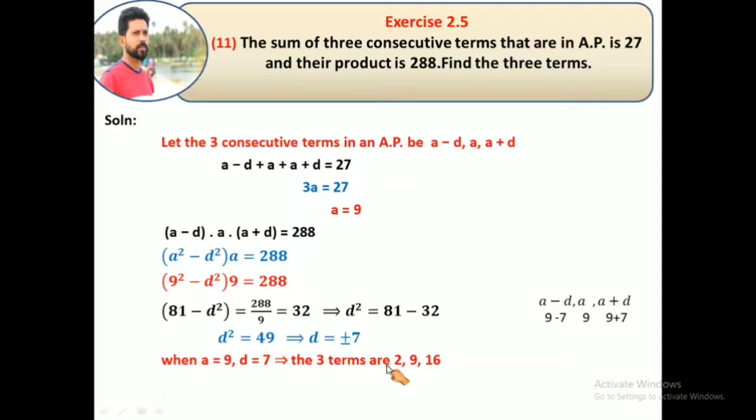So what are the three terms? a-d, a, a+d. Substitute the values: a = 9 and d = +7. So 9-7 = 2, then a = 9, then 9+7 = 16. Considering the positive term, the three terms are 2, 9, 16.